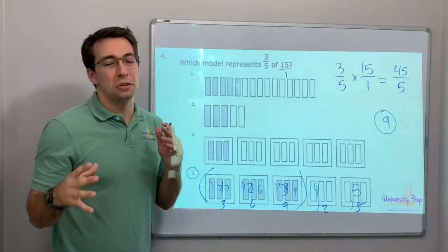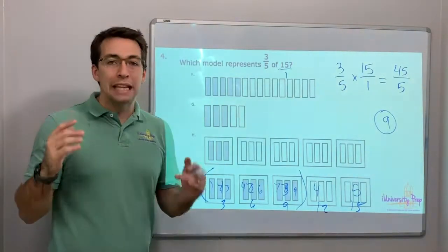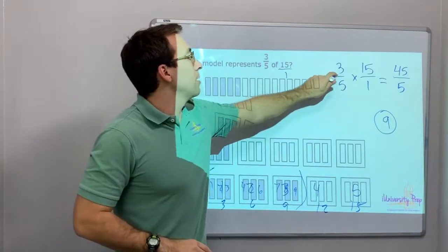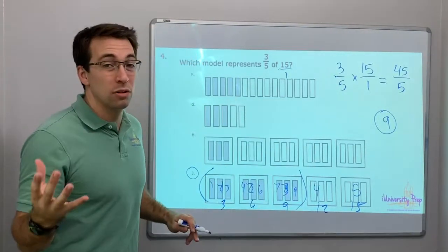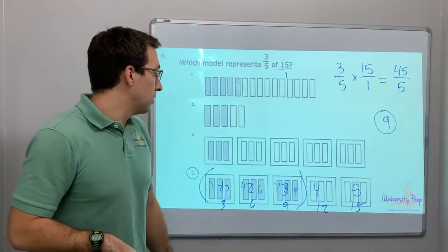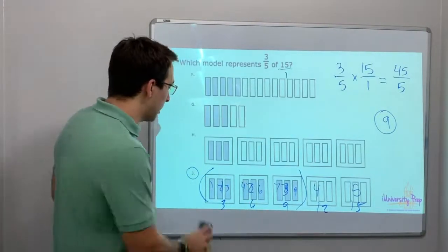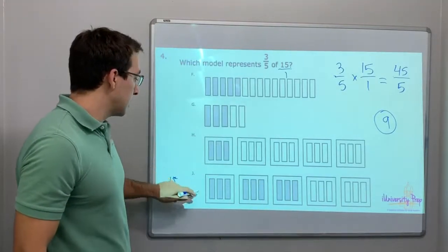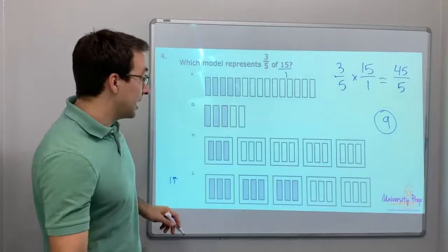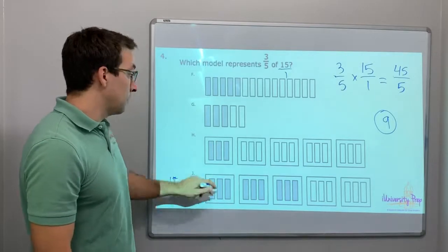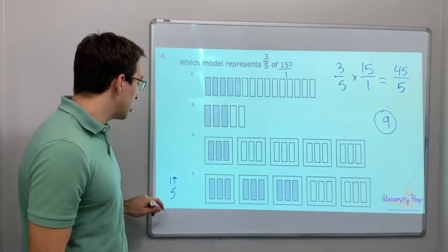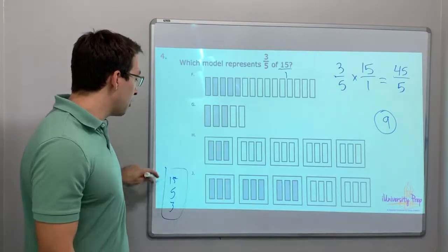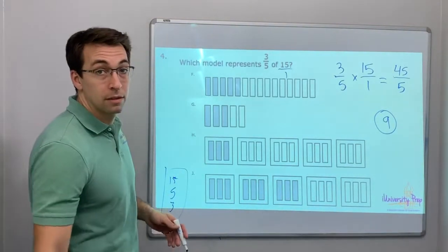These picture graphs, sometimes they're confusing, but they do make sense at the end. You can defend it with numbers. Some people can see it visually, but count, right? This picture graph right here has all the numbers we need. It has fifteen individual things. It's got five groups. And it's got three shaded. Three-fifths out of fifteen. It's got all three numbers that we need to be correct.